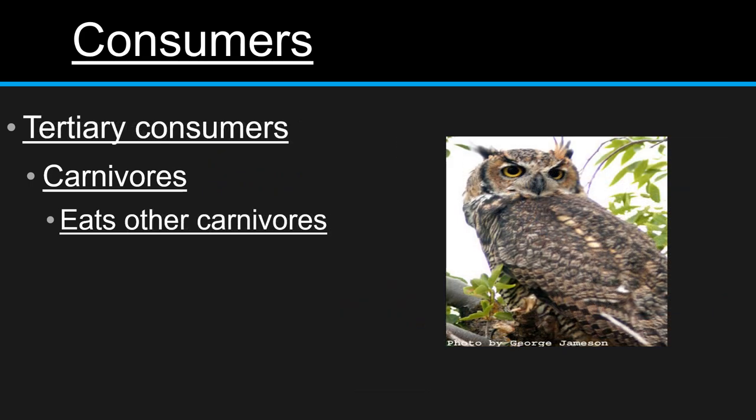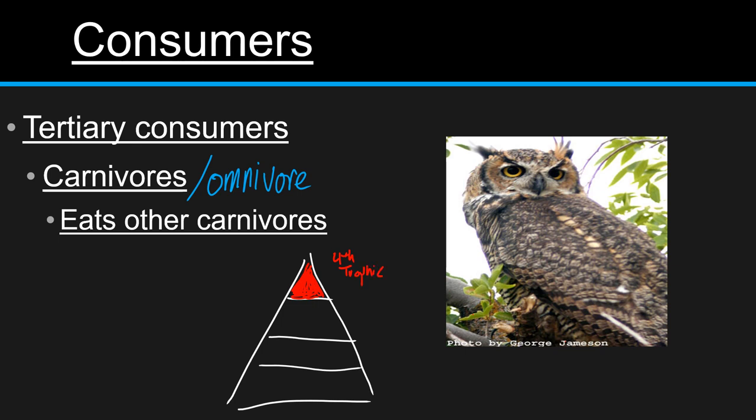Then we have tertiary consumers, which are also carnivores, and obviously could be an omnivore. They are going to eat other carnivores. And they're going to occupy the top level at the fourth trophic level. Depending on how big the ecosystem is, it is possible to have another tier of quaternary consumers. It just depends on the ecosystem itself.